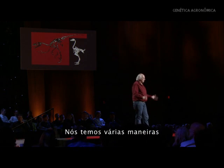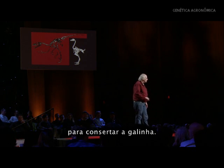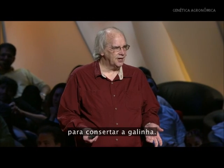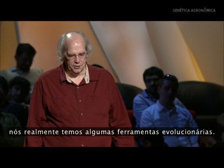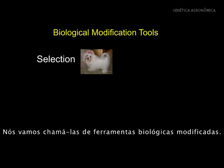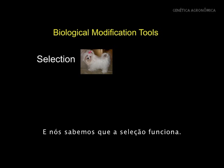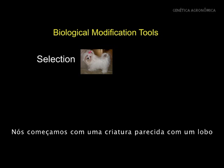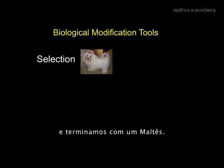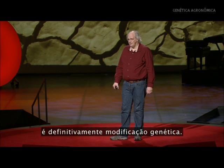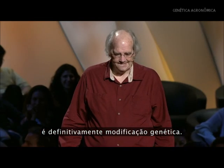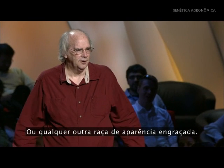We have a number of ways that we can fix the chicken. Because evolution works, we have some evolutionary tools — we'll call them biological modification tools. We have selection, and we know selection works. We started out with a wolf-like creature and we end up with a Maltese, or any of the other funny looking little dogs. That's definitely genetic modification.